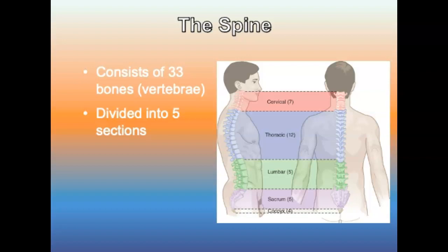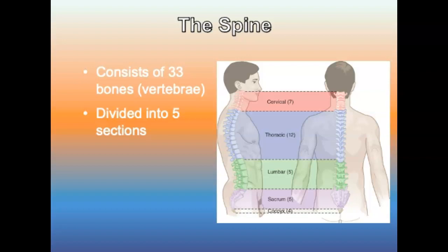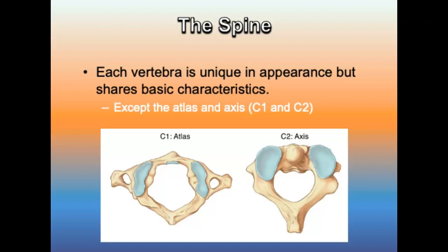The spine consists of 33 bones or vertebrae divided into five sections. It is stabilized by ligaments and muscles and supports and protects neural elements, allowing for fluid movement and an erect stature. The vertebral body supports and stabilizes the body. Each vertebra is separated and cushioned by intervertebral discs. As the body ages, these discs become thinner, causing height loss. Stress on the vertebral column can cause discs to herniate into the spinal canal, potentially injuring the spinal cord or nerve roots.